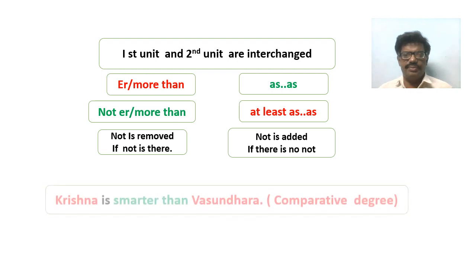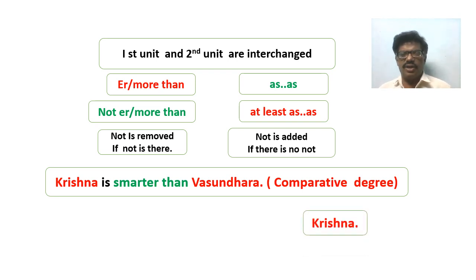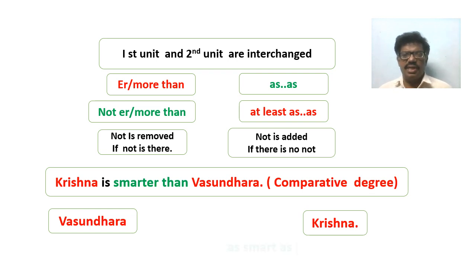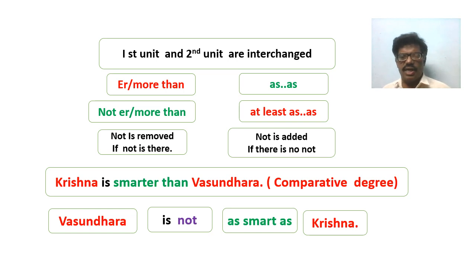Let us take one example. 'Krishna is smarter than Vasundara' — this is in comparative degree. We have to change it into positive degree. First rule: interchange the units — Vasundara is brought first, Krishna is brought second. Next, since the question has 'than', we write 'as smart as'. Next, there is no 'not' in the question, so we add 'not'. The answer is: 'Vasundara is not as smart as Krishna'.